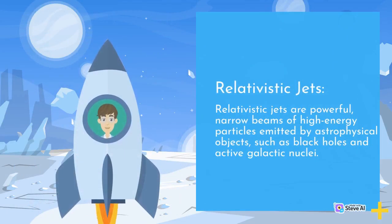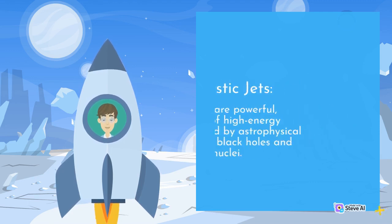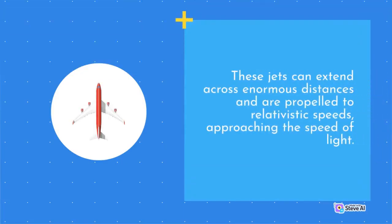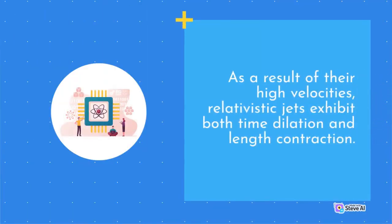Relativistic Jets are powerful, narrow beams of high-energy particles emitted by astrophysical objects such as black holes and active galactic nuclei. These jets can extend across enormous distances and are propelled to relativistic speeds, approaching the speed of light. As a result of their high velocities, relativistic jets exhibit both time dilation and length contraction.